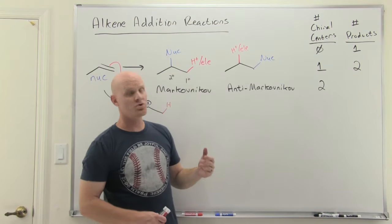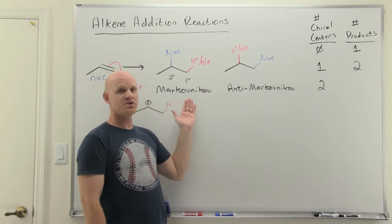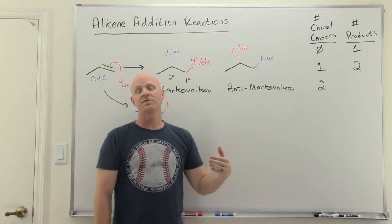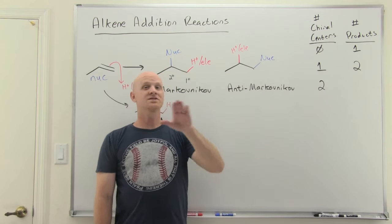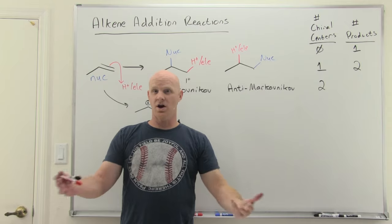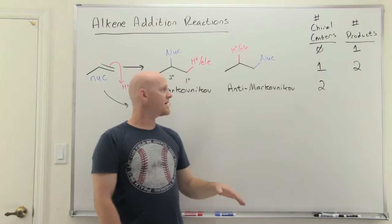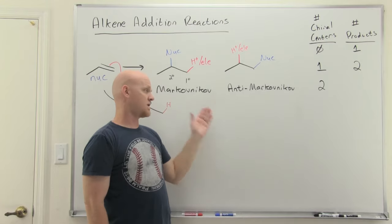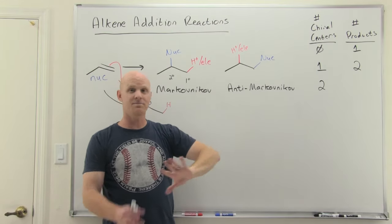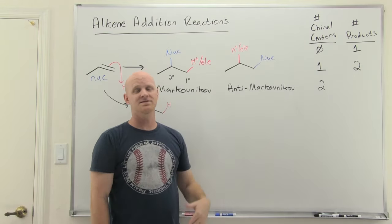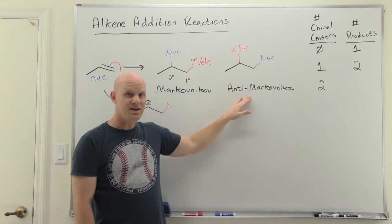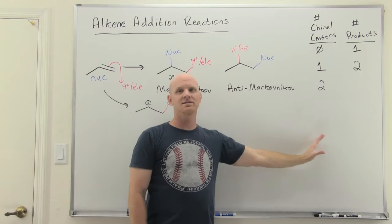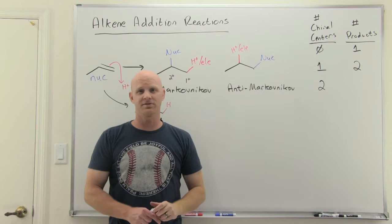All right, so now we've covered the regioselectivity, which the options are Markovnikov and anti-Markovnikov. And we've covered the stereoselectivity, which is syn versus anti or just none. And so one thing to note, be very careful that you don't shorten anti-Markovnikov just saying anti. Is it Markovnikov or anti? Because anti is something else. That's stereoselectivity in this context. And so just be very careful. Anti-Markovnikov is regioselectivity. Just saying plain old anti refers to stereoselectivity.